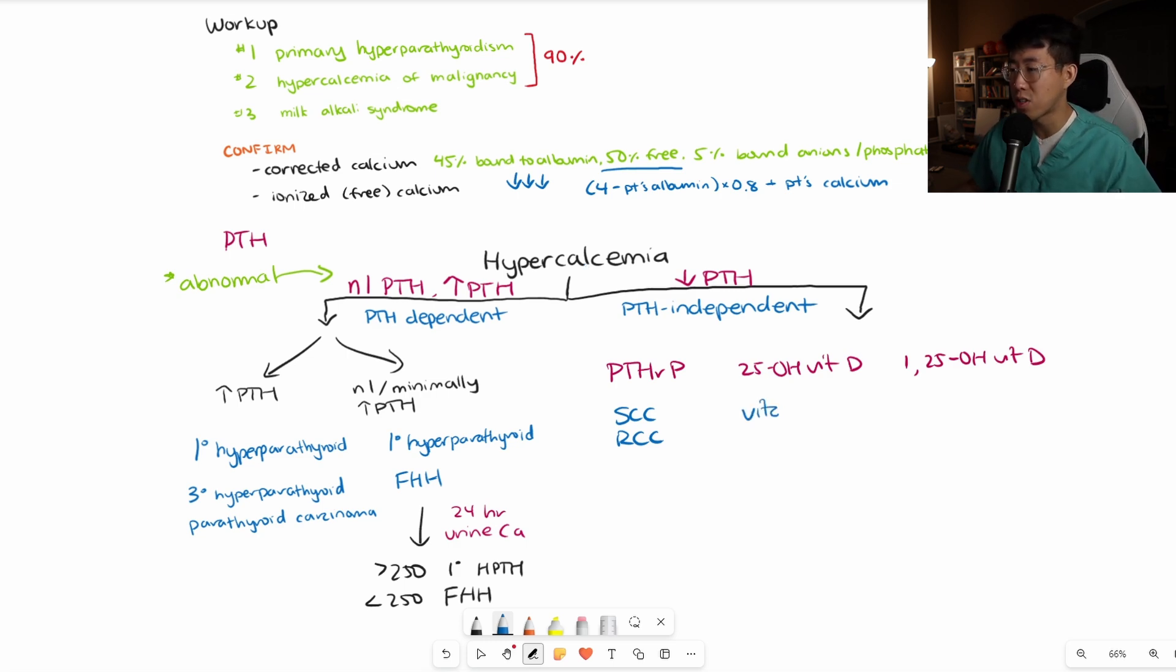If the 25-OH vitamin D is elevated, you have vitamin D toxicity. If the 1,25-hydroxyvitamin D is elevated, think of lymphoma and granulomatous diseases. Things like sarcoid, TB, and histoplasmosis.